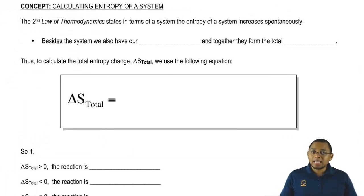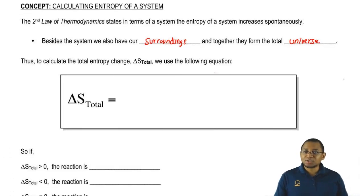Now, we're going to say that we can't only focus on our system. Besides our system, we have our surroundings, and we're going to say our system plus our surroundings gives us our entropy total, or our universe. So system plus surroundings gives us our total universe.